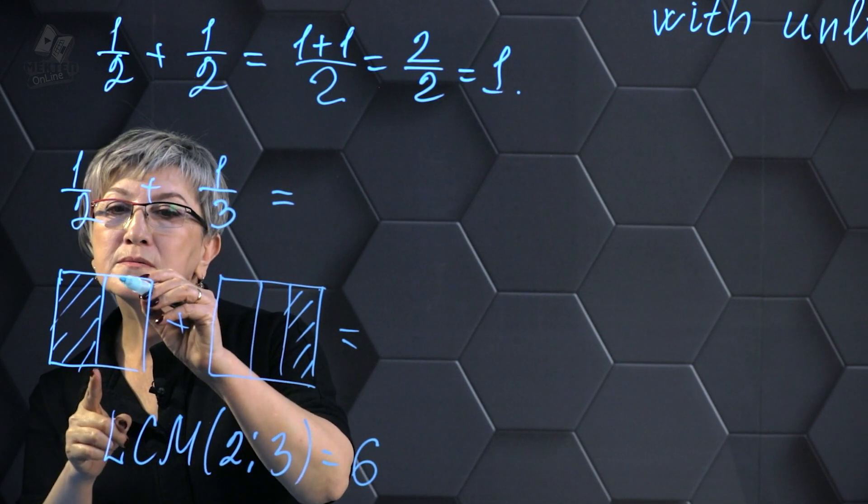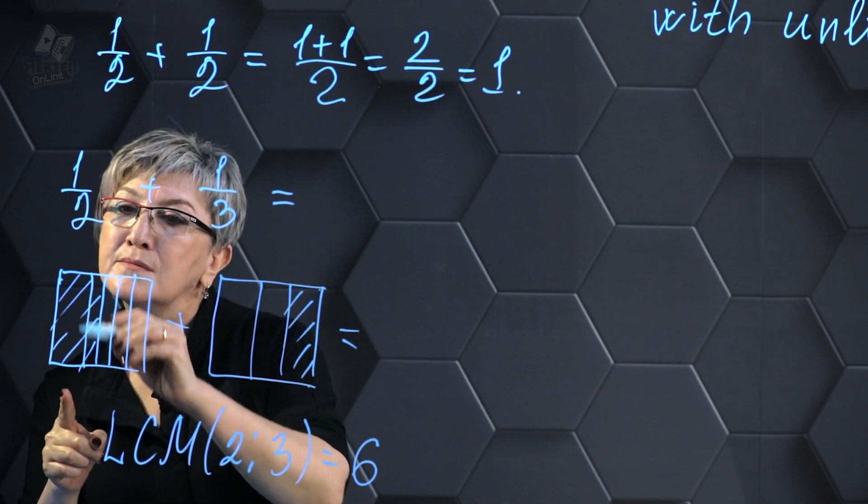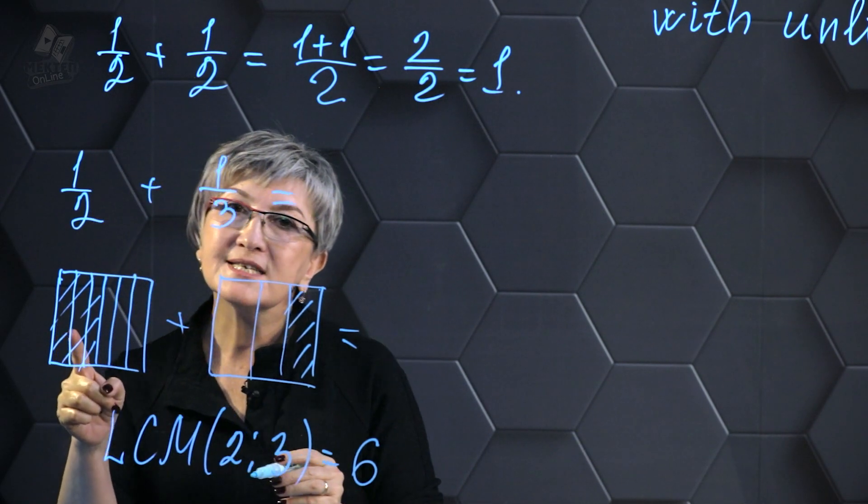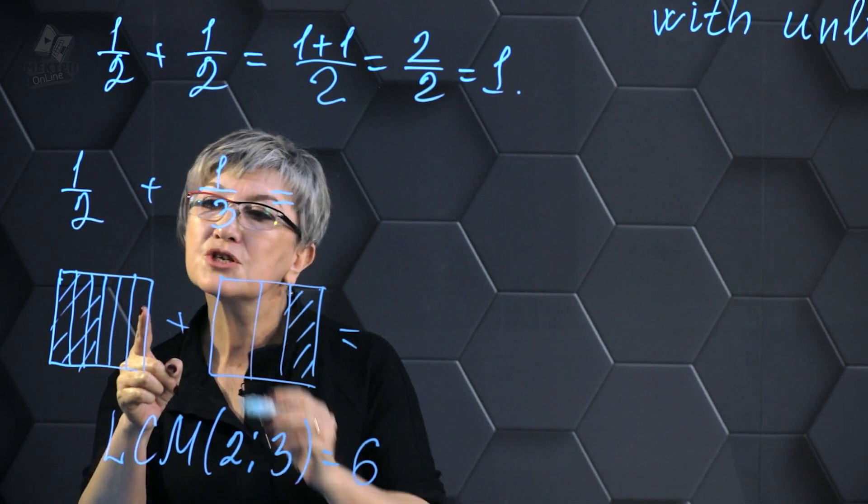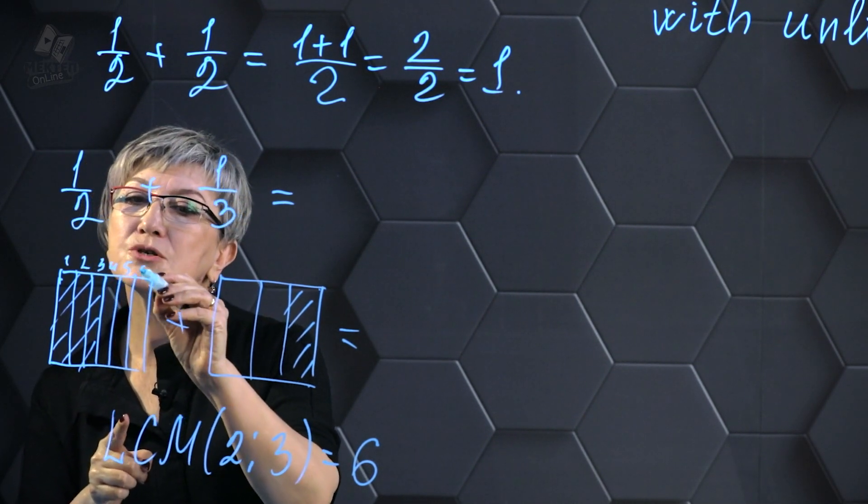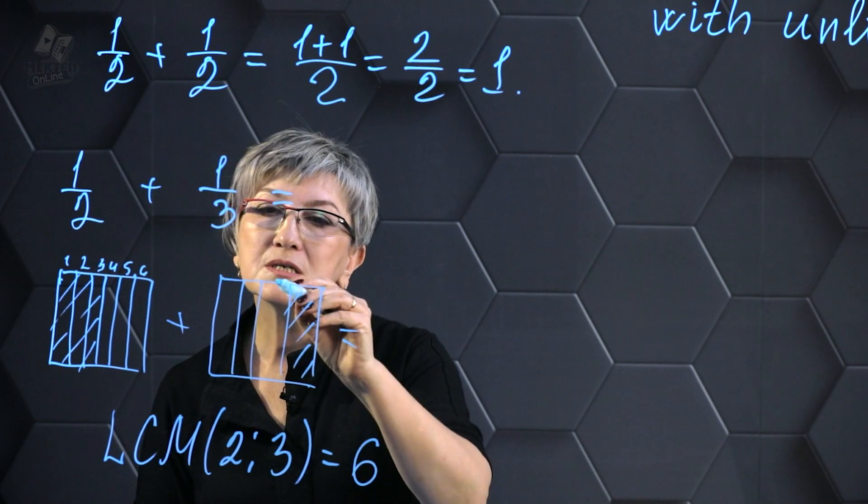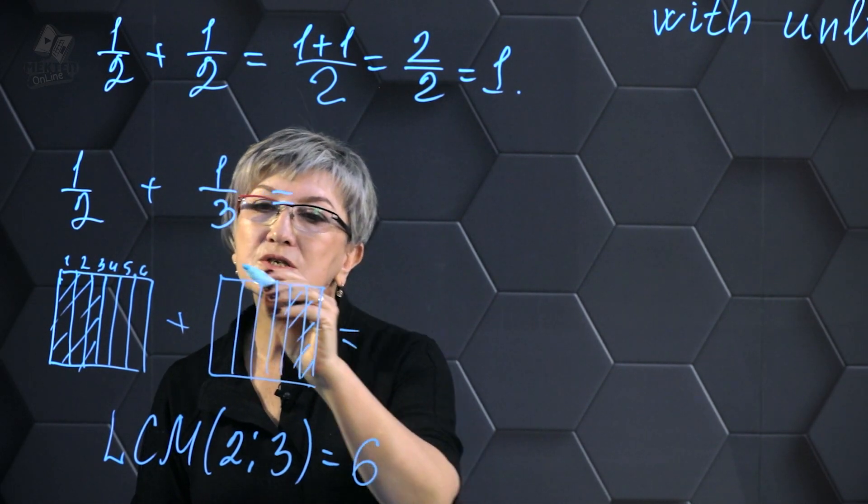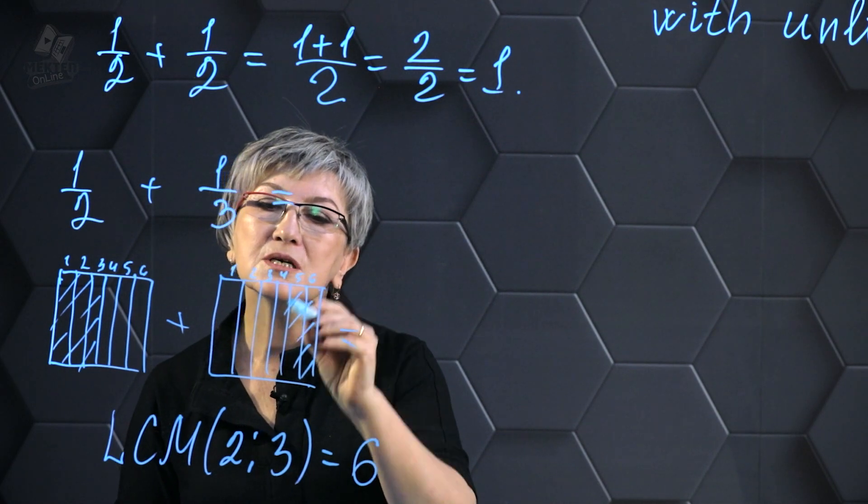What can I do? I can divide this square into six equal parts. Let's label them 1, 2, 3, 4, 5, and 6. And this square I can also divide into six equal parts, labeled 1, 2, 3, 4, 5, and 6. What do I get as a result? I obtain some other fractions. In this section I have 3/6 and in this section I have 2/6.